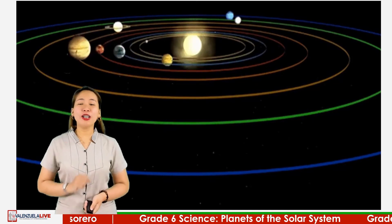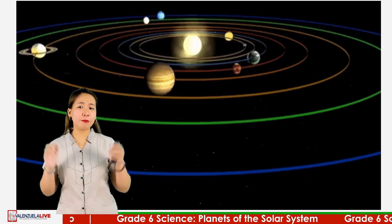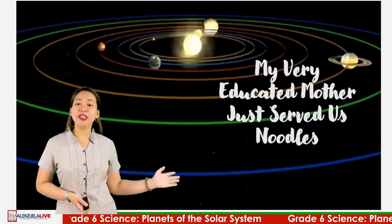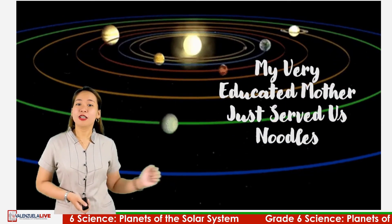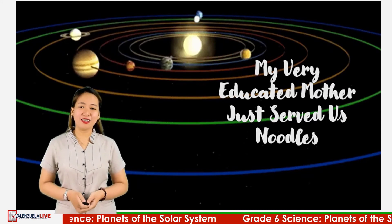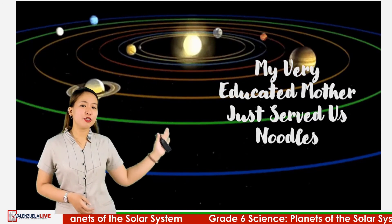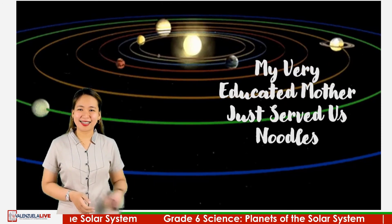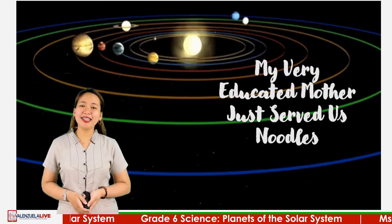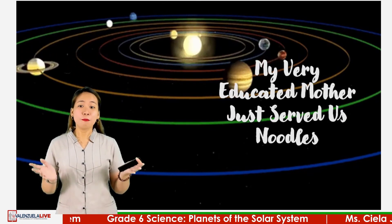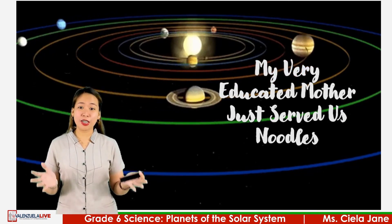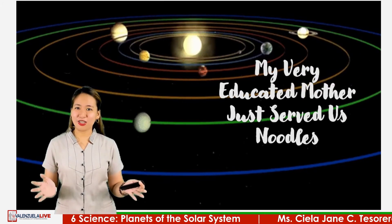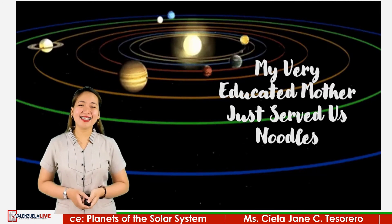If you want to memorize the position of the planets, just remember this phrase: 'My Very Educated Mother Just Served Us Noodles.' Just get the first letter of each word and you'll remember the arrangement of planets. Let us all repeat the phrase: My Very Educated Mother Just Served Us Noodles. Very good, Grade 6! I can see that you learned so much today.